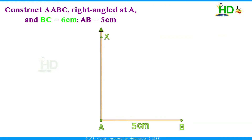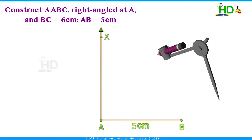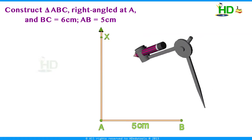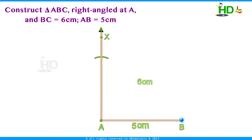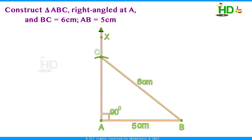Now you require BC = 6 cm. Taking the compass with radius 6 cm, draw an arc from B so that it intersects ray AX. Mark this point of intersection as C. Now join BC. This is the required triangle ABC with AB = 5 cm, BC = 6 cm, and angle A = 90 degrees. This is a right angle triangle.